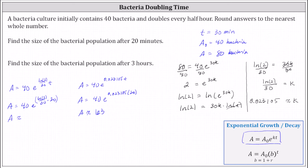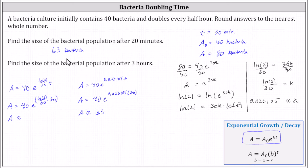So for the first question, the bacterial population after 20 minutes is approximately 63 bacteria. This makes sense because the doubling time is 30 minutes, and since the time here is only 20 minutes, the population should be less than 80.